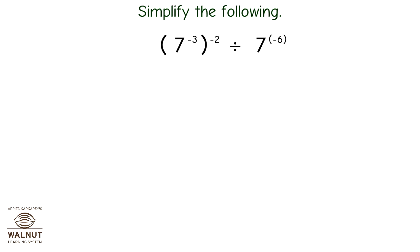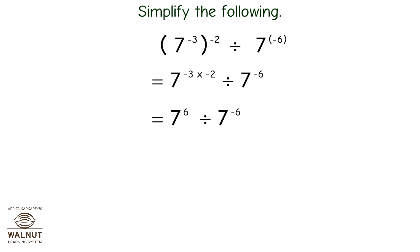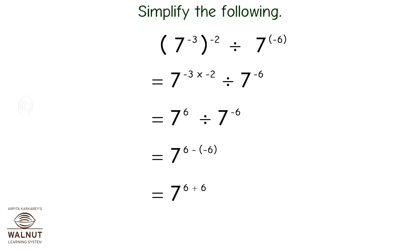Simplify the following: 7 raised to minus 3 whole raised to minus 2 divided by 7 raised to minus 6. Applying a raised to m whole raised to n equals a raised to m into n, we get 7 raised to 6. Then 7 raised to 6 divided by 7 raised to minus 6 equals 7 raised to 6 minus bracket minus 6 bracket, which equals 7 raised to 6 plus 6, which equals 7 raised to 12.